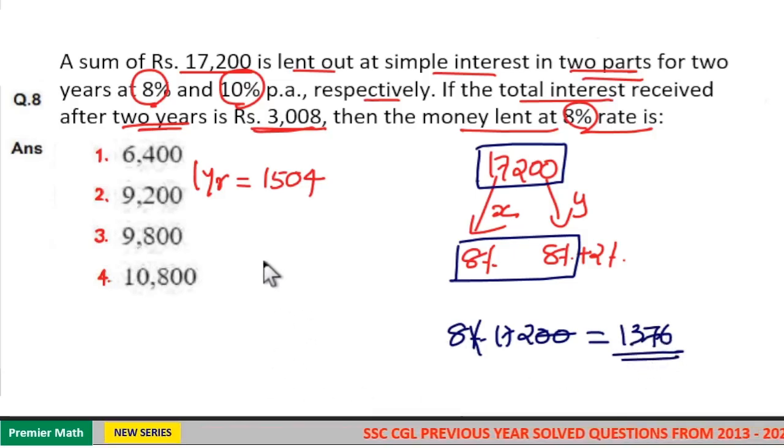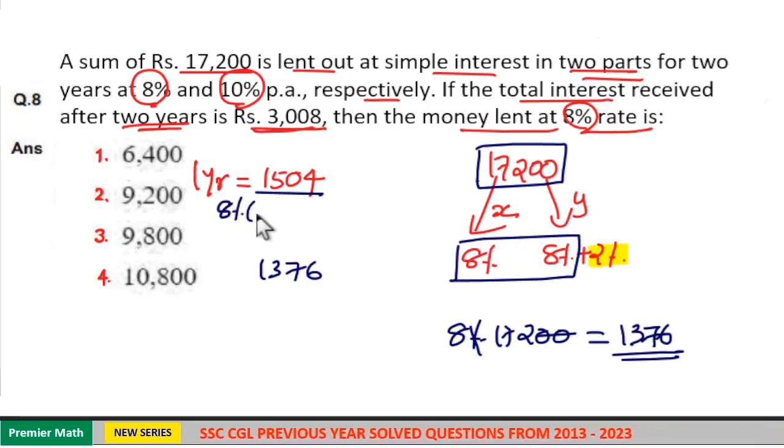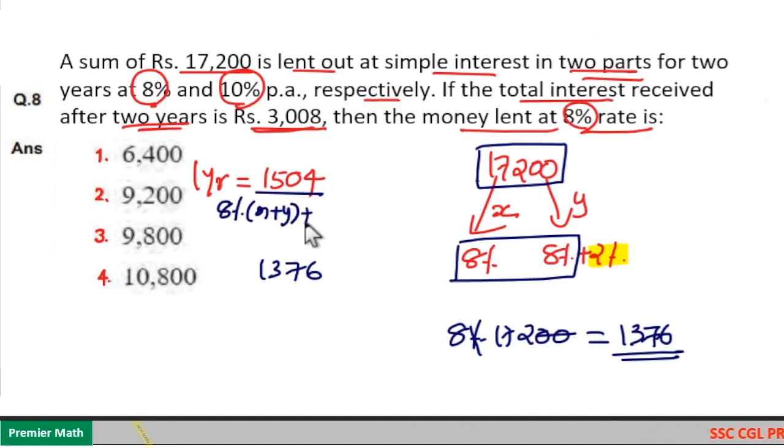So, if you subtract this 1,376 from 1,504, which is equal to 2% of Y. That is, this 1,504 is 8% of X plus 8% of Y plus 2% of Y. That is, 1,504 is equal to 8% of X plus Y plus 2% of Y. Now, 8% of X plus Y means 1,376.